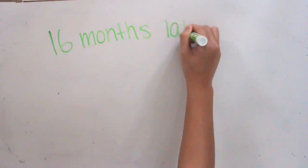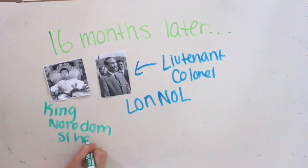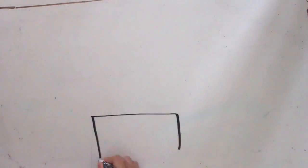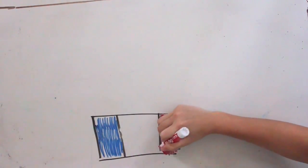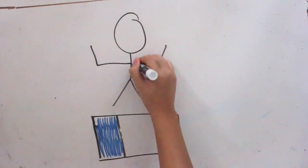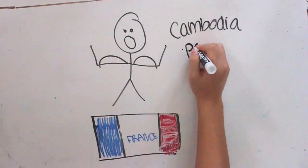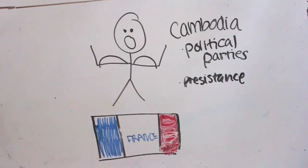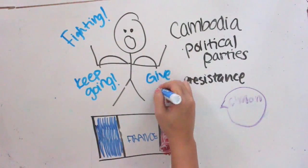Sixteen months later, King Norodom Sihanouk joined forces with Lieutenant Colonel Lenore. Due to the pressure from the Cambodian political parties and the persistence of the King, the French ultimately gave way.